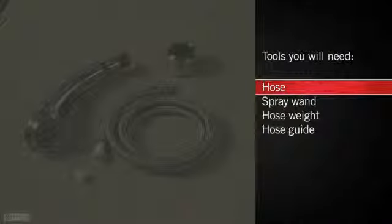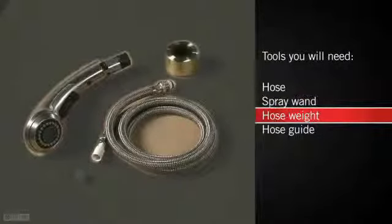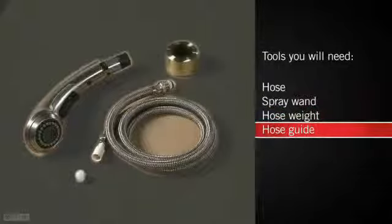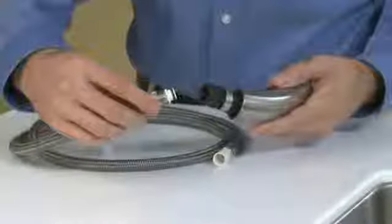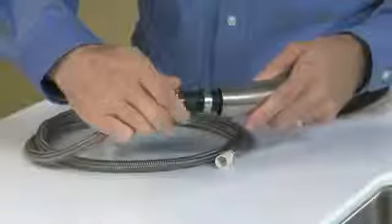Next, we'll install the hose and spray wand. For this step, you'll need the hose, spray wand, hose weight, and hose guide. First, screw the threaded fitting of the hose into the spray wand to prevent the hose from being pulled all the way into the spout.